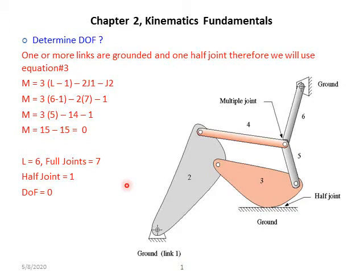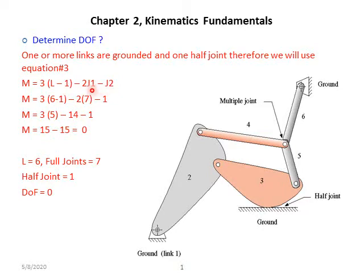In example two, we again have a complex mechanism. First we have to figure out which equation to use. This mechanism has more than one ground link — one, two, and three — so formula number one is not applicable, we have to go for formula two. But there's an additional problem: this mechanism has a half joint. Whenever there is a half joint and more than one ground link, we have to use equation number three: m = 3(l − 1) − 2j1 − j2.